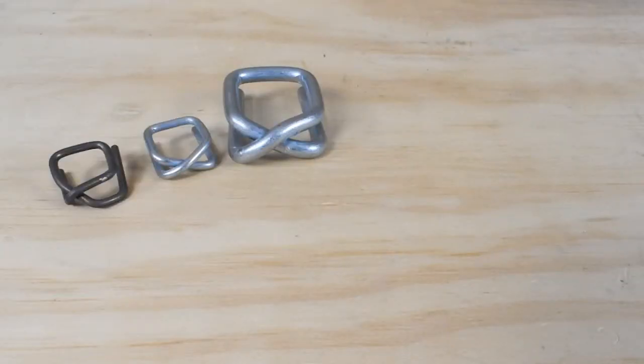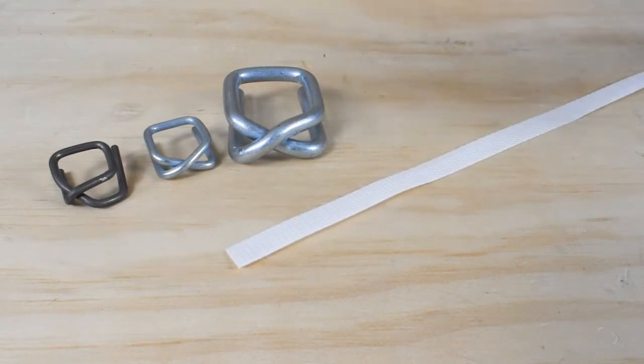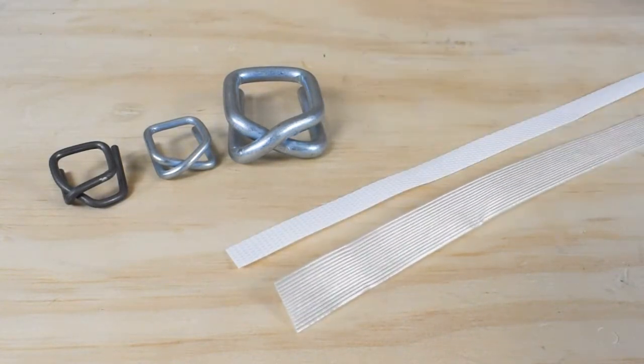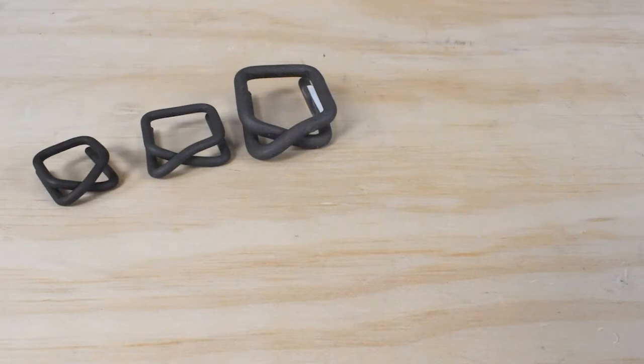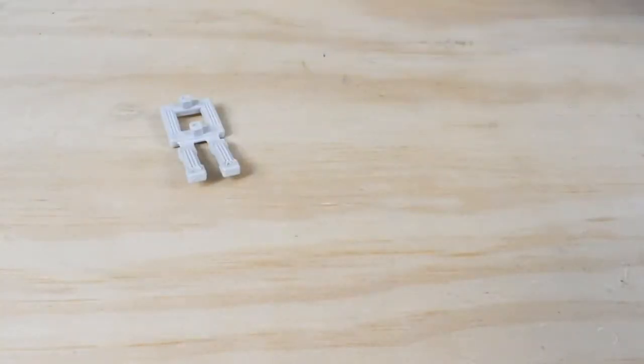Galvanized wire buckles have a smooth, sometimes silver coating and are ideally paired with polypropylene composite or bonded cord strap. Phosphate wire buckles have a gritty texture and are typically paired with woven cord strap. Plastic buckles are only used with polypropylene strap.